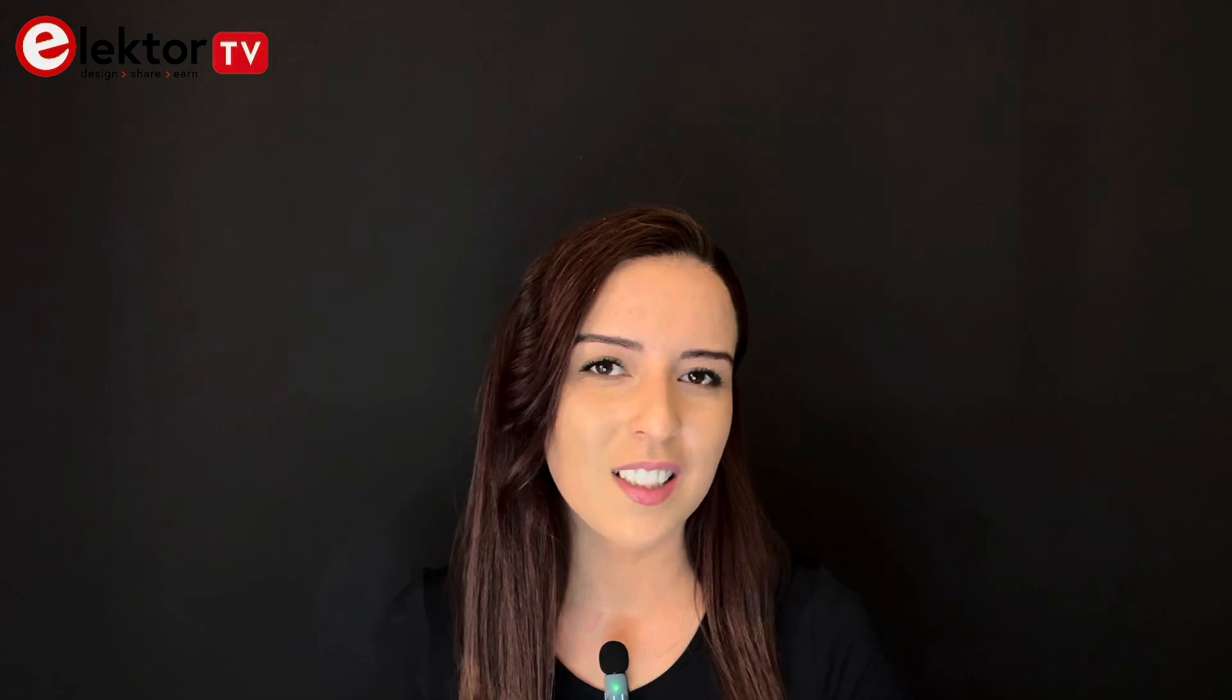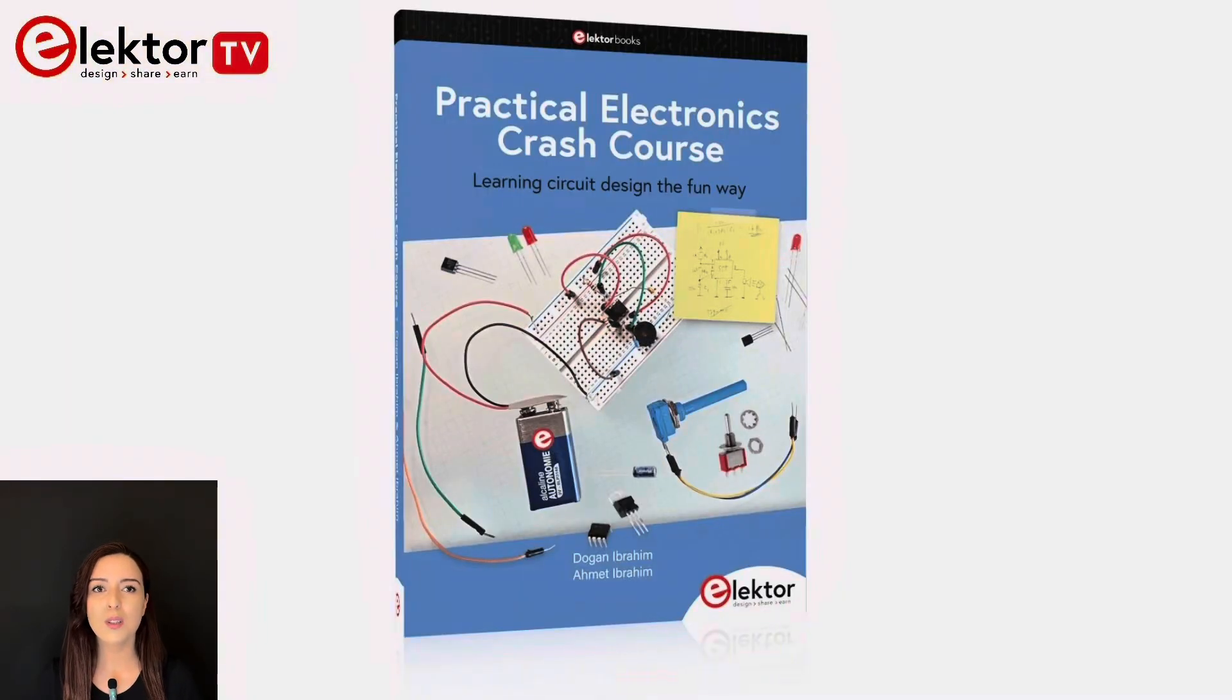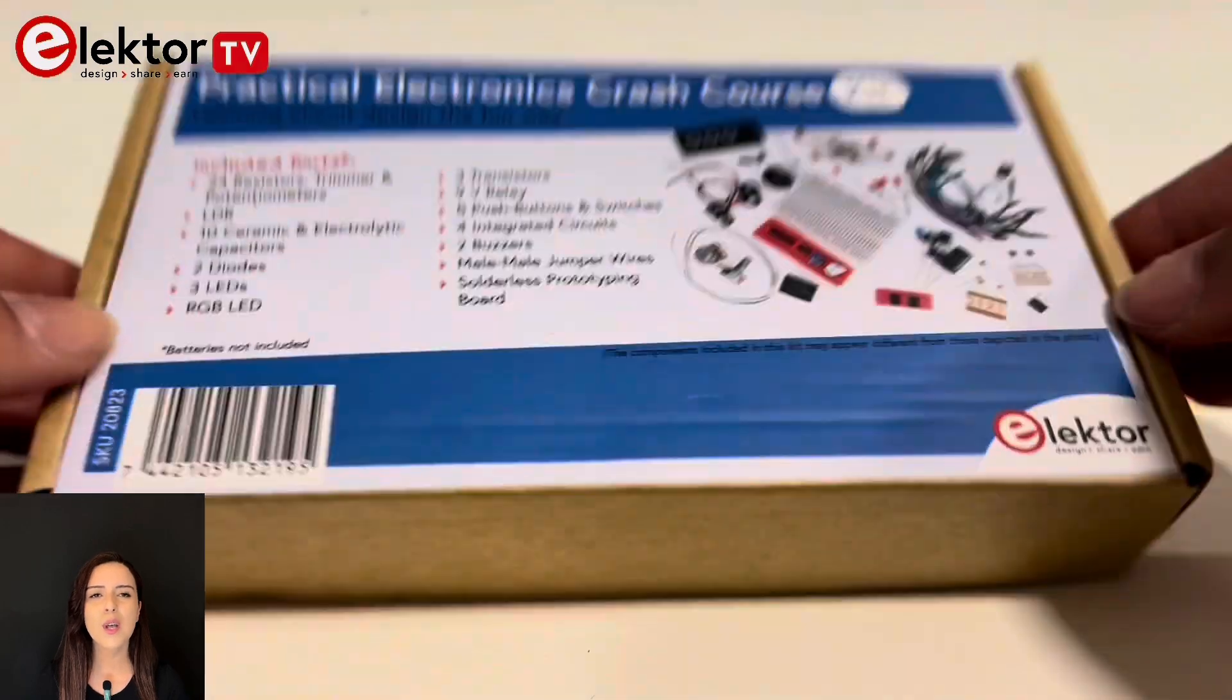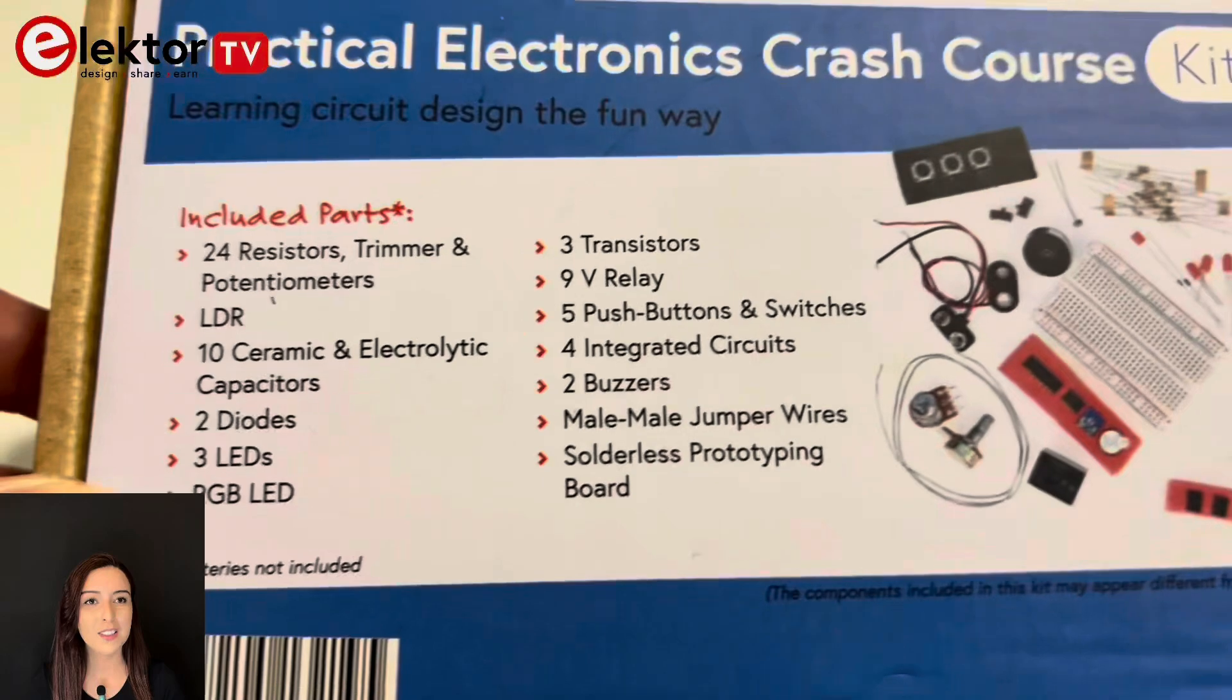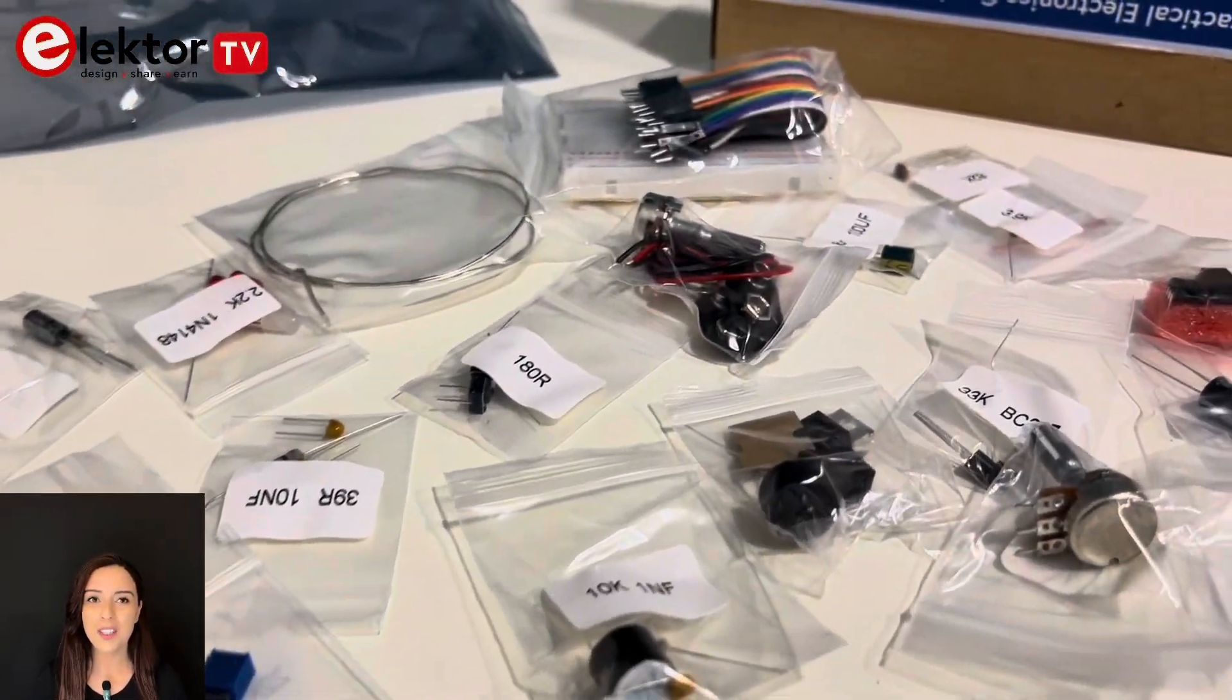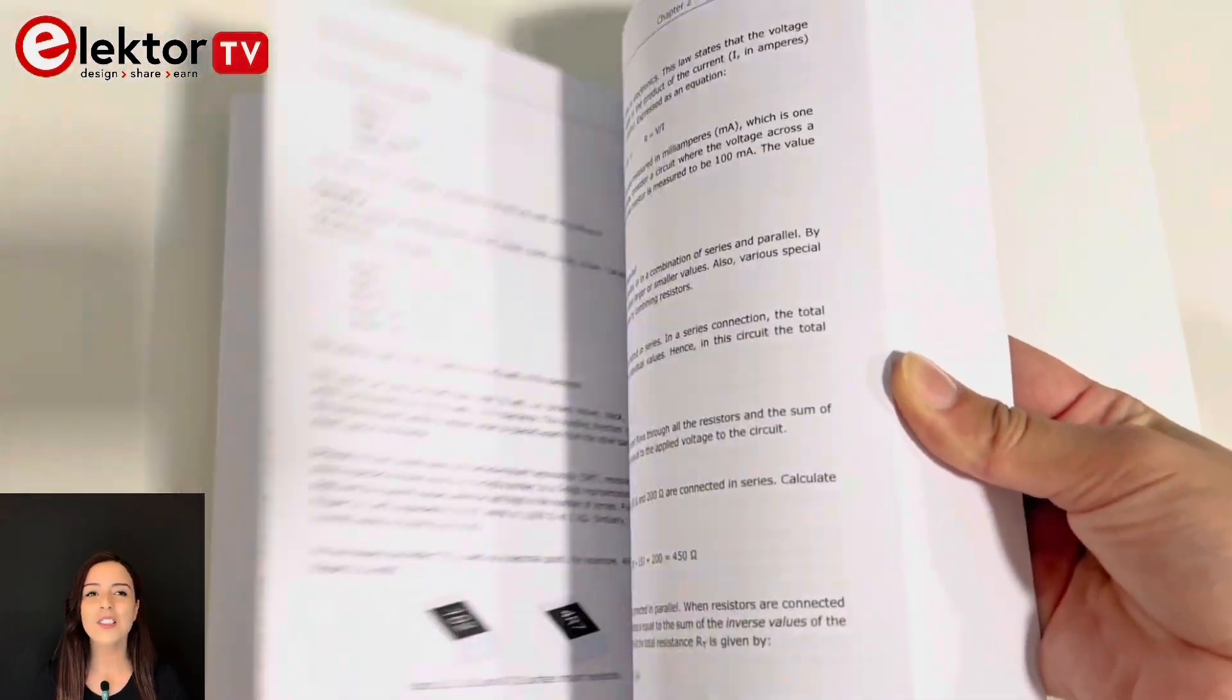Let's start by talking about what's included in this fantastic bundle. You'll get a comprehensive book that covers all the fundamental concepts of electronics, along with a parts kit filled with both active and passive components from resistors and capacitors to transistors and integrated circuits, breadboard, jumper wires and more. Everything you need to get hands-on experience is right here.